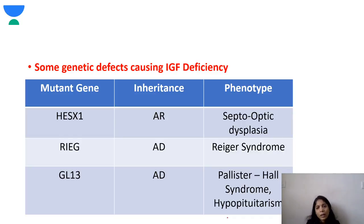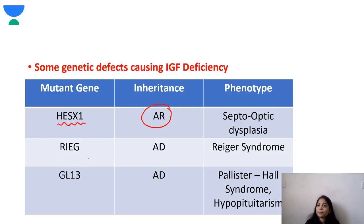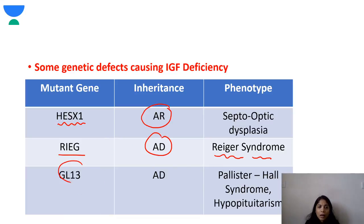These are some genetic defects causing insulin-like growth factor deficiency that may appear in entrance exams. Remember septo-optic dysplasia — it is an autosomal recessive condition and the mutant gene is HESX1. Rieger syndrome is an autosomal dominant condition. GLI3 is a mutant gene with autosomal dominant inheritance, seen in Pallister-Hall syndrome, which can also present with hypopituitarism.